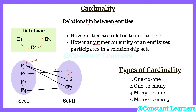F4 is linked to F7. For F7, we can say that it is a many-to-one relationship because two entities, F1 and F4, are connected to the single entity F7, establishing a many-to-one relationship. This is nothing but cardinality.